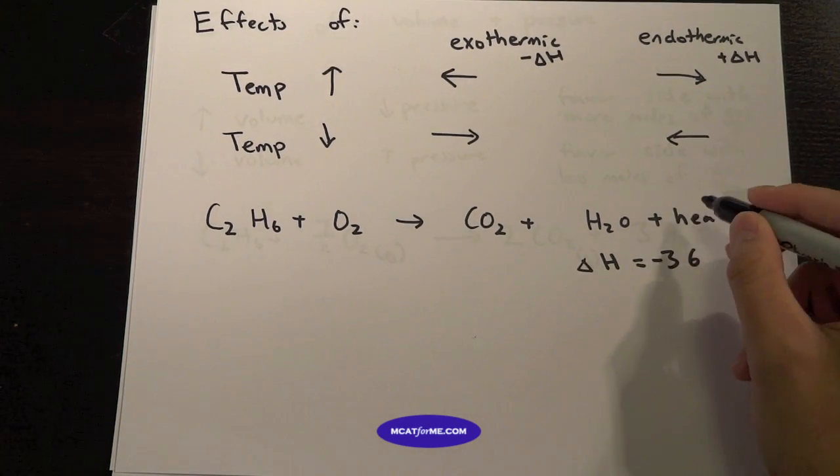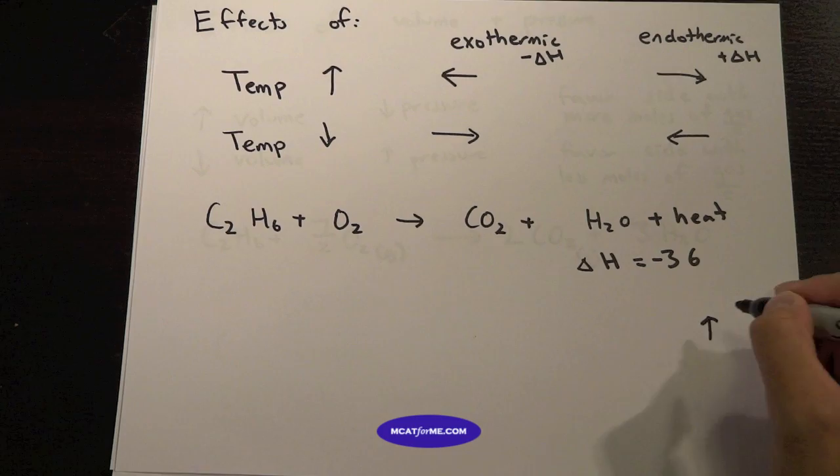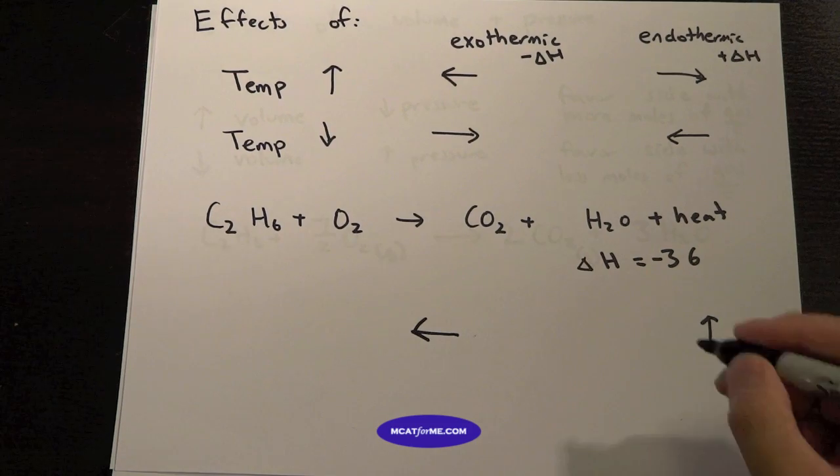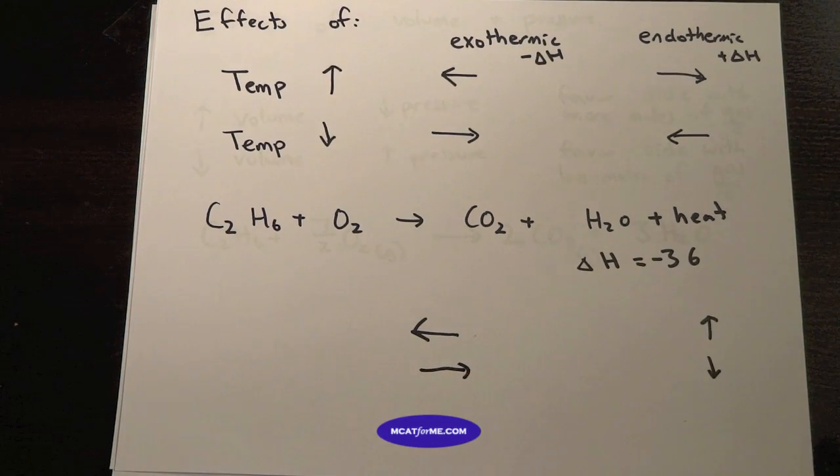We can assume it like a product. So if we increase the temperature, we're increasing heat, we're going to want to go in that direction. If we're decreasing the heat, we're going to want to reverse those changes and go to the right. So we think of it exactly like a product.